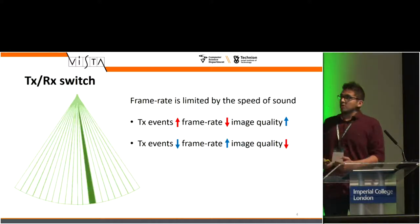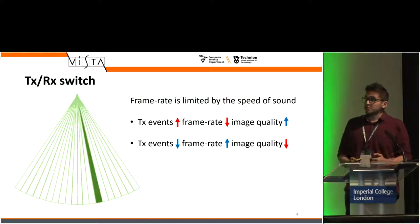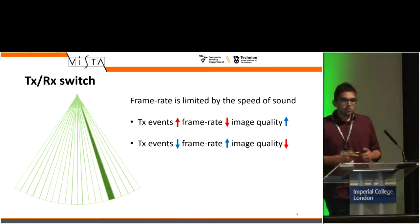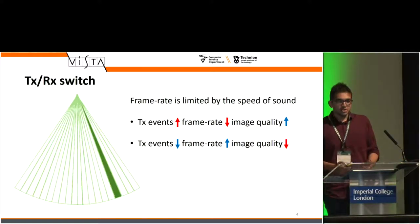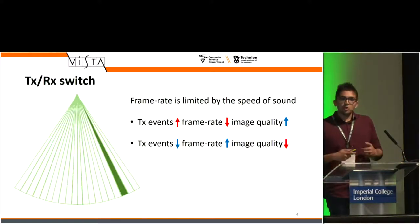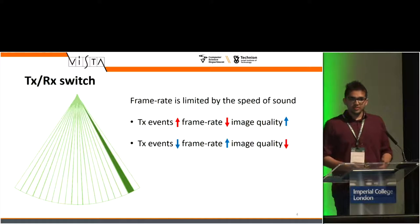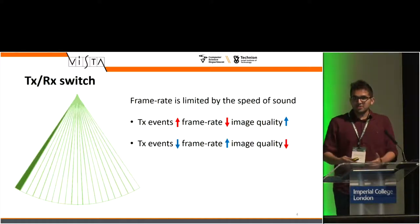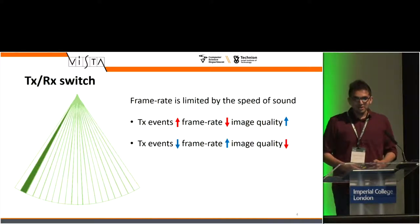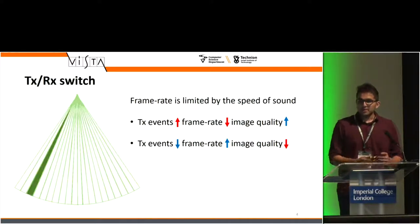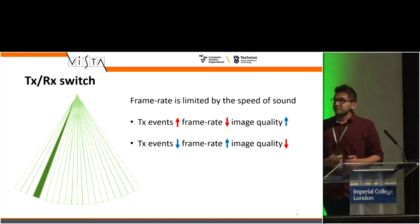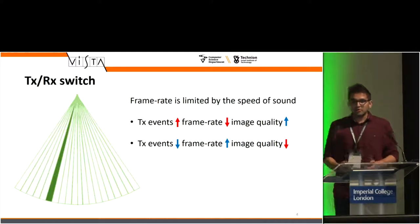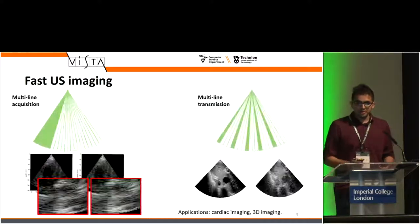The image quality increases with more transmit events. But if you want to do high frame rate imaging — that is, if you want to do fewer TX events — since we can't surpass the speed of sound, the frame rate increases but as a result our image quality decreases.